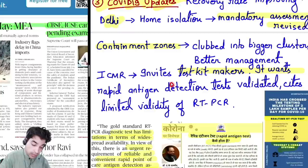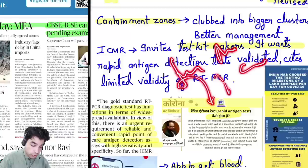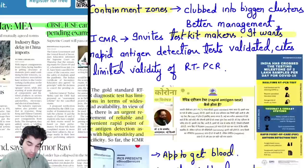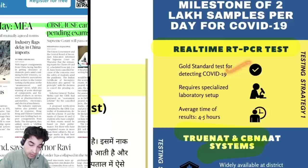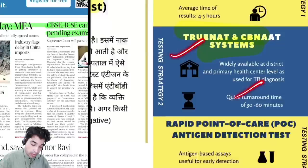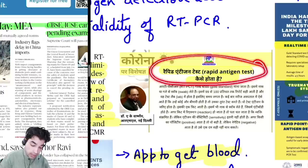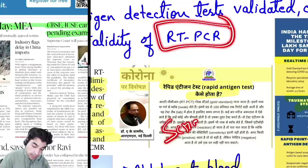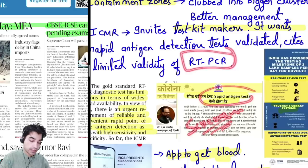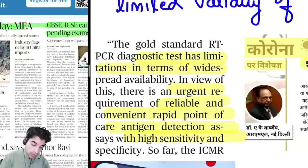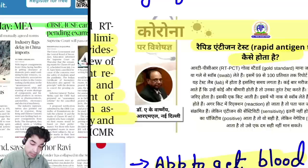The RT-PCR test is considered the gold standard but has shortcomings — it requires specialized laboratories, is time-consuming, and costly, and has availability issues. Due to the limited availability of RT-PCR, the rapid antigen detection test is being promoted. This antigen-based assay detects viral antigens in the body and checks antibody levels. However, the rapid antigen test is not very sensitive or accurate, so RT-PCR remains the diagnostic standard. The rapid antigen test is used for preliminary screening.